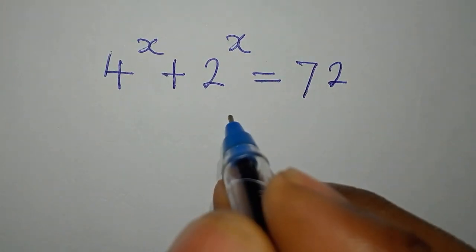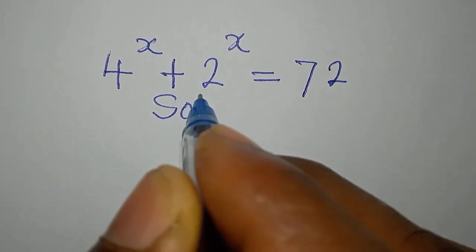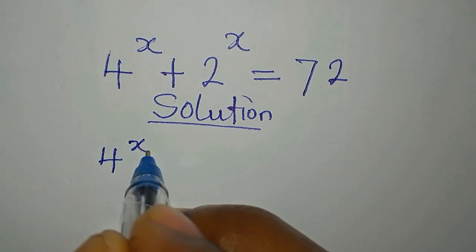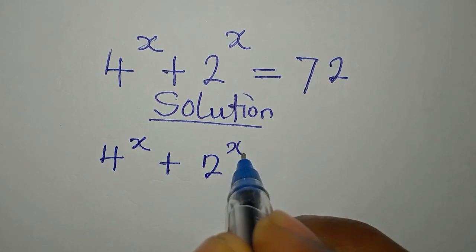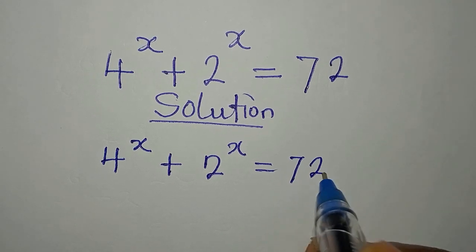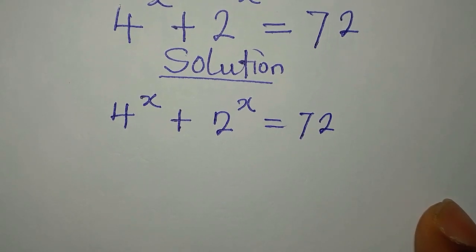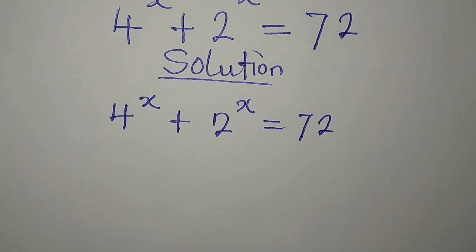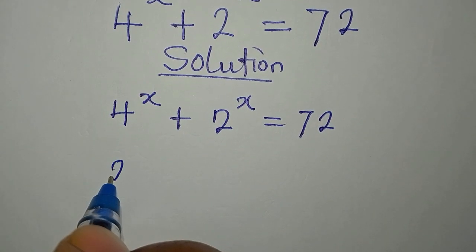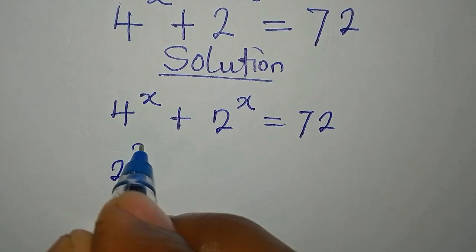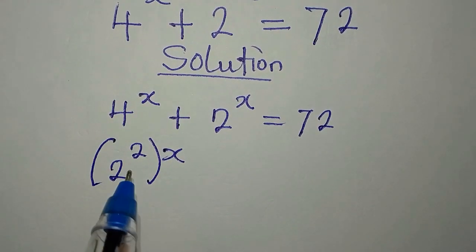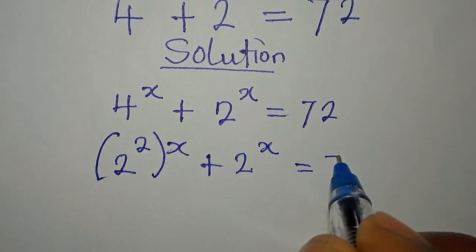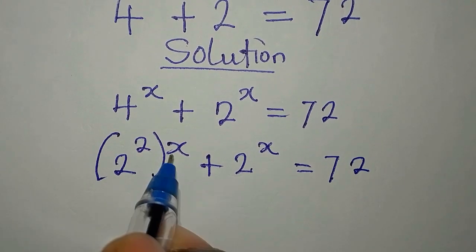Let us provide the solution to this problem. We have 4 to the power of x plus 2 to the power of x equals 72, and we are looking for the best way to deal with this problem. So what do we do? 4 to the power of x is the same thing as 2 to the power of 2, then to the power of x, because 4 is 2 squared. Then plus 2 to the power of x, and this is equal to 72.